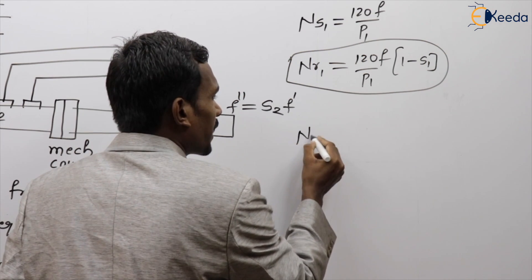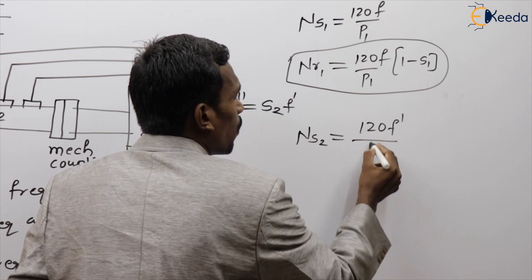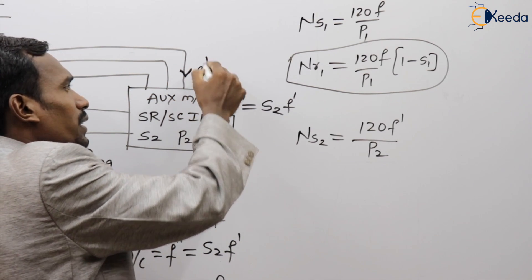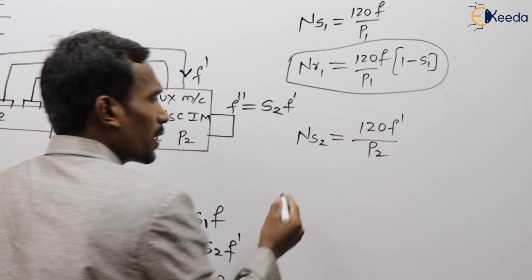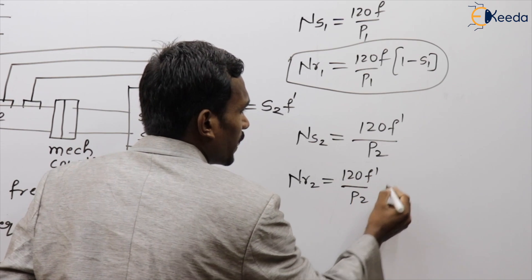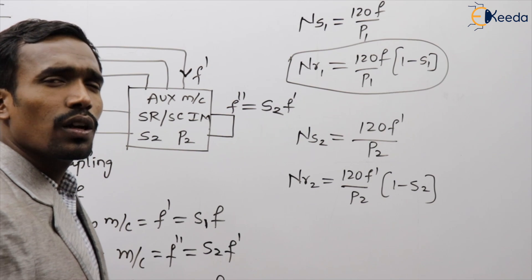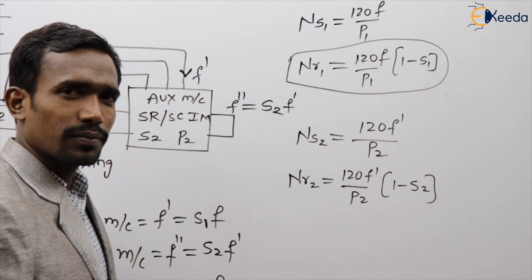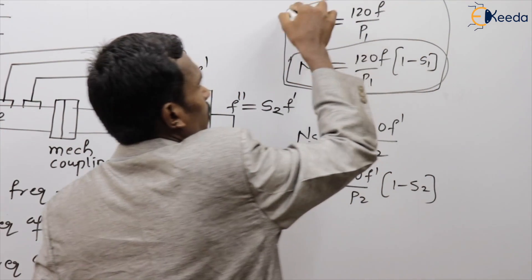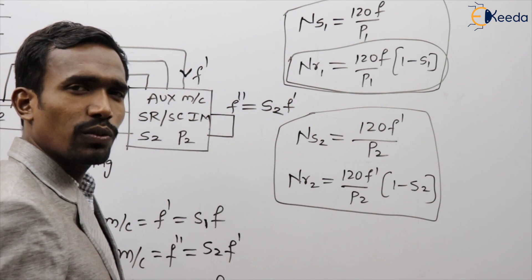The synchronous speed of machine 2 is ns2 = 120F dash / P2, because the supply frequency for machine 2 is F dash. The rotor speed of machine 2 is ns2 × (1 − S2). These expressions apply to machine 1 and machine 2 respectively.